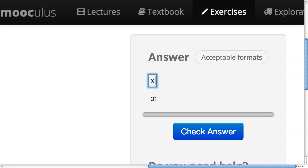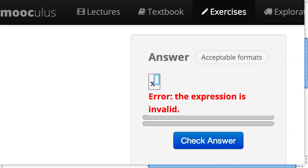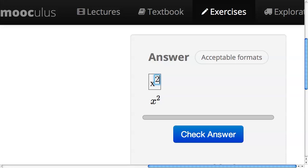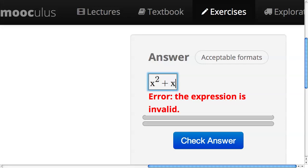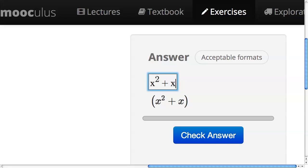I can type in x, and then use shift 6 on my keyboard to get a caret, and type in the exponent. And I can use the arrow key to move over, and I could add another term to my polynomial.